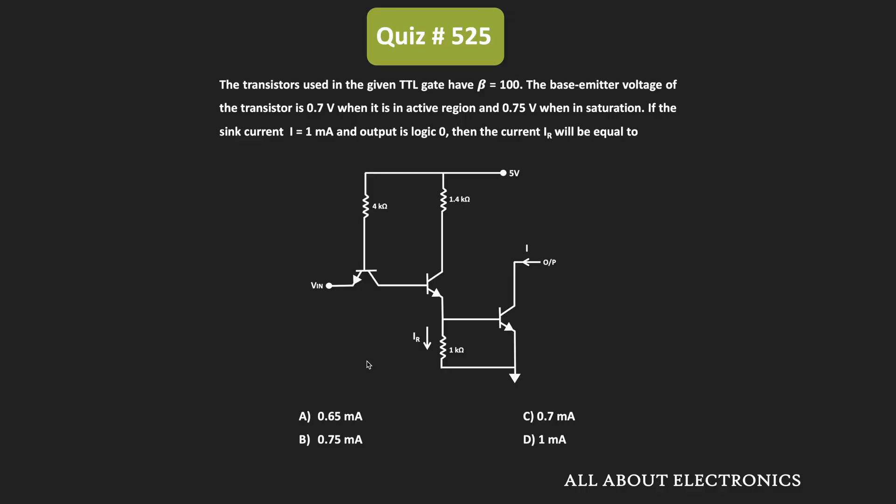Hey friends, welcome to the YouTube channel All About Electronics. So in this question, we have been given the TTL gate and we have been given that the transistors which are used in the given gate have the beta of 100.